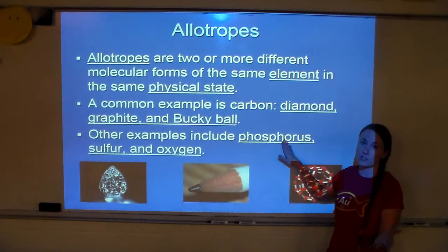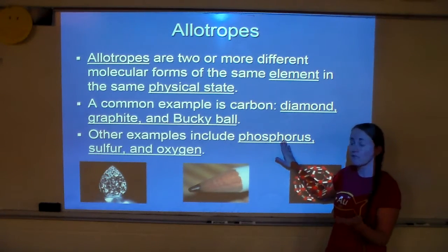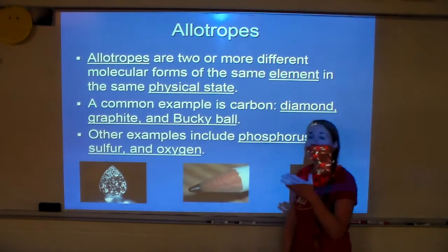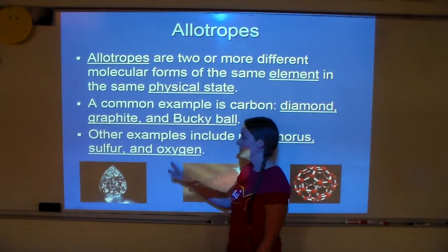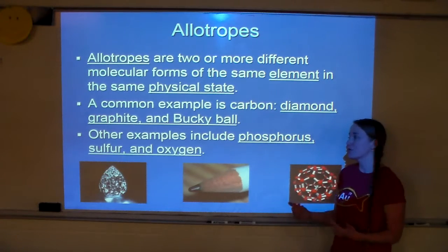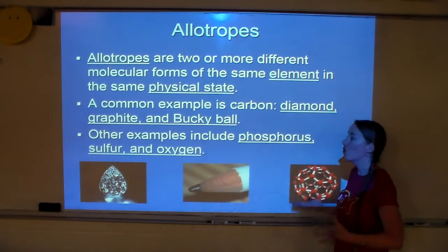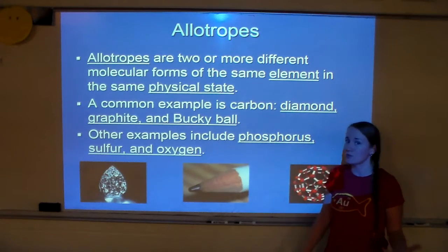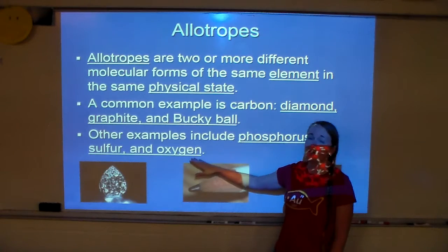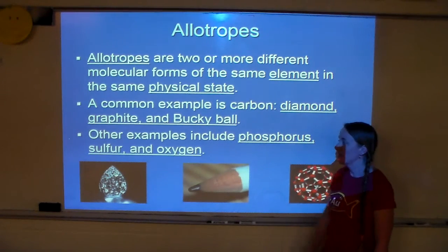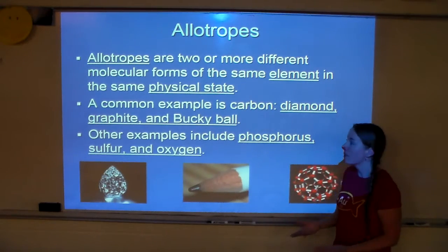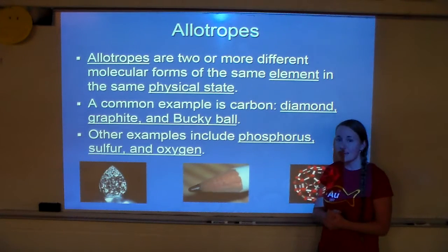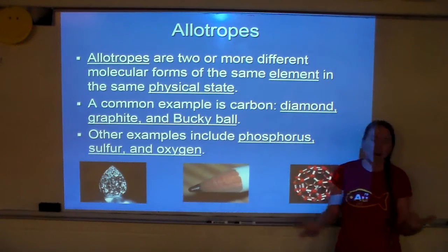Other things that have allotropes include phosphorus — you have red phosphorus and white phosphorus. They're both phosphorus but they're allotropes — different forms. For sulfur, you can have S8 (eight sulfurs bonded together) or just S. For oxygen, you can have O2, which is the oxygen from the atmosphere that we breathe in, or O3, which is ozone in our ozone layer. If you try to breathe ozone, you won't live very long. Even though they're both made of only oxygen, O2 and O3 are different. Allotropes are the same element in different forms — the bonding is different.